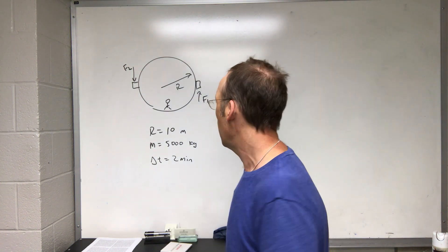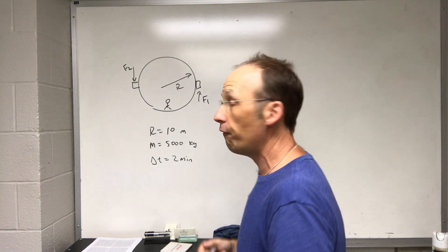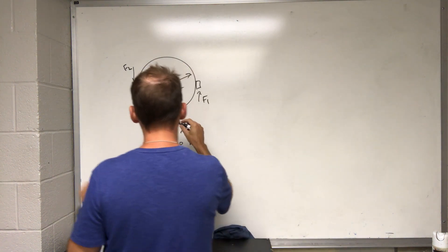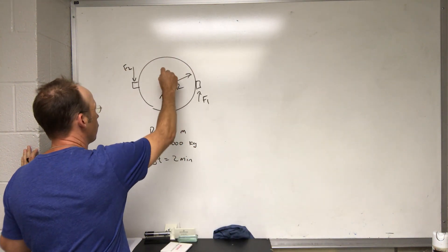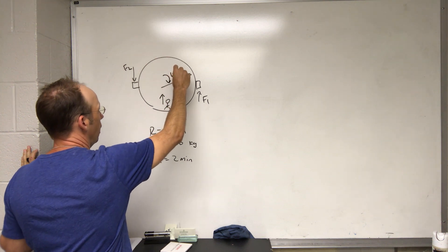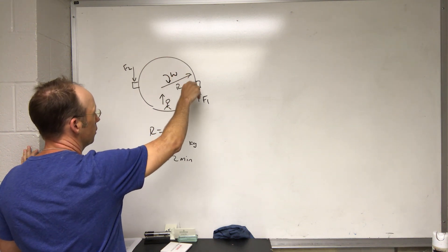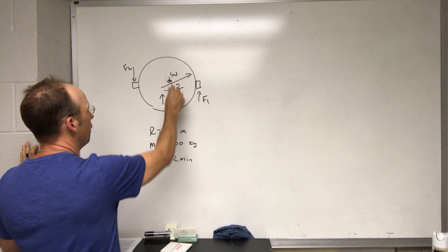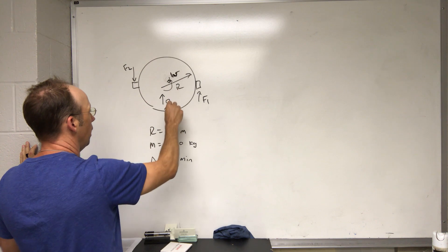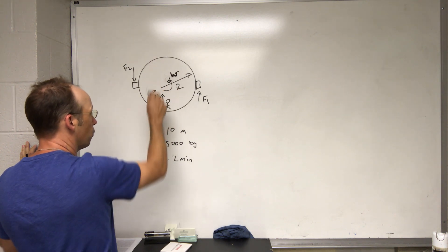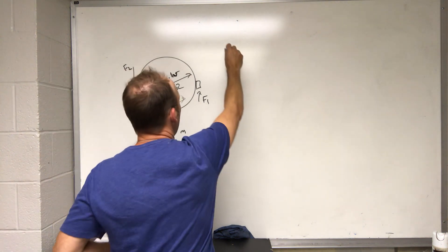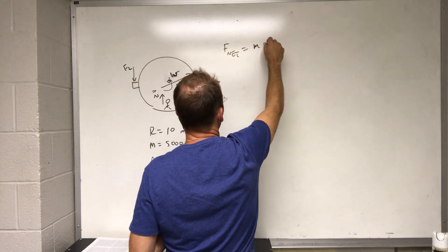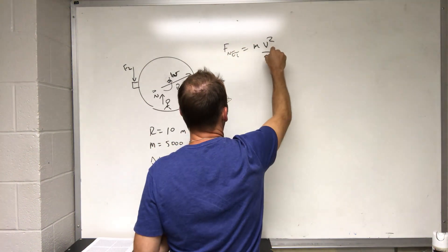First thing we need to do is say how fast does it need to spin in order to get half of G. So here I'll have, if this is rotating, I'll have it rotating this way. There's my angular velocity and I'll have the normal force pushing towards the center.